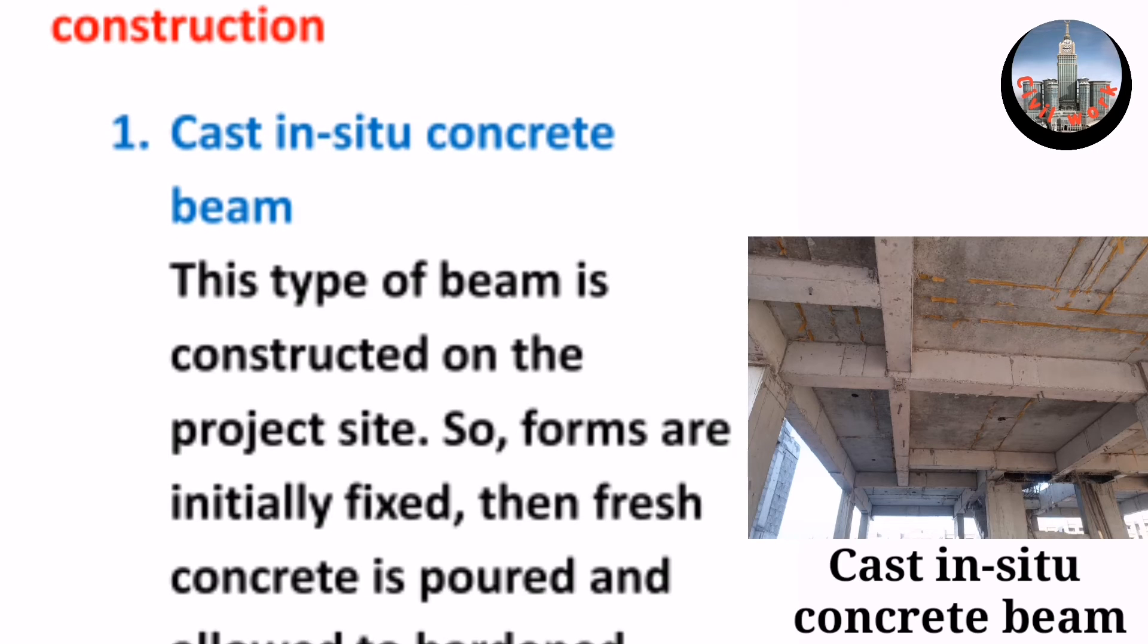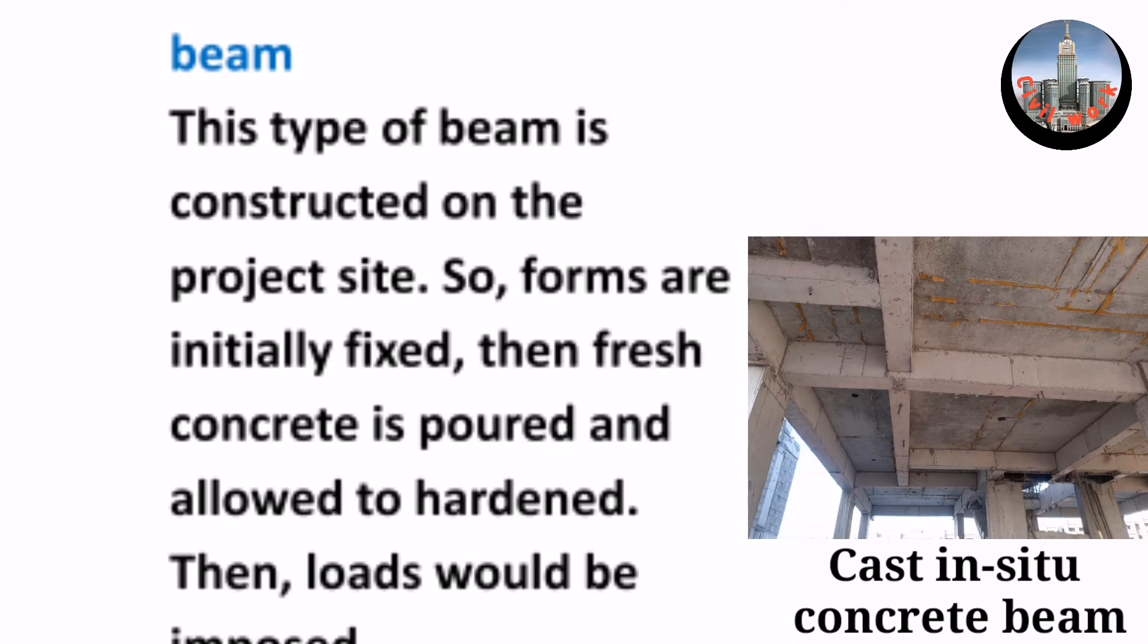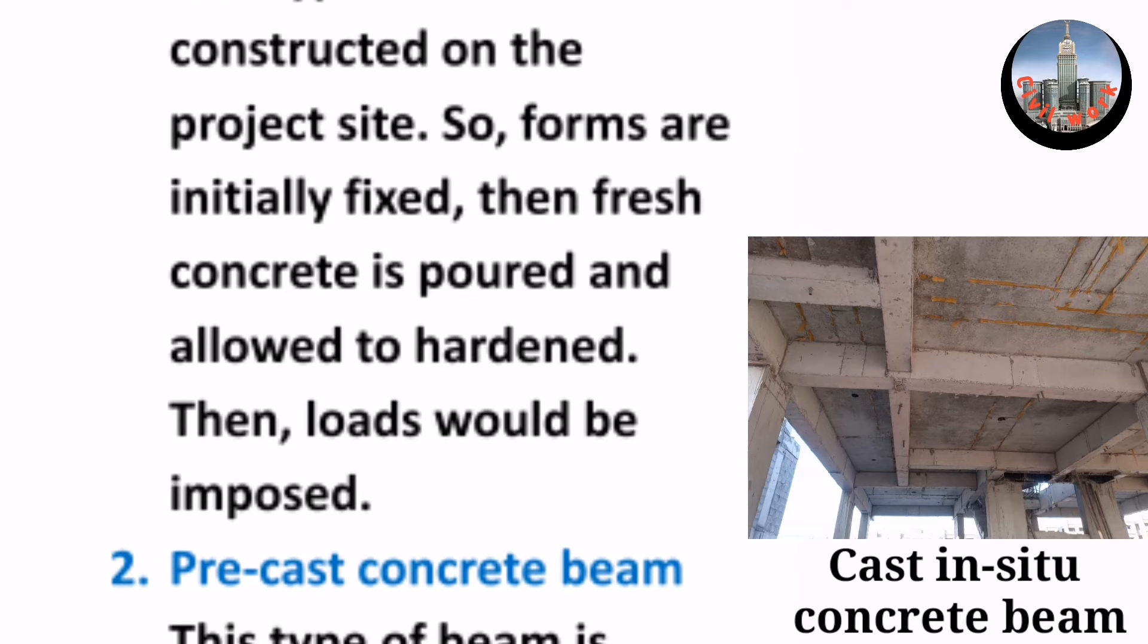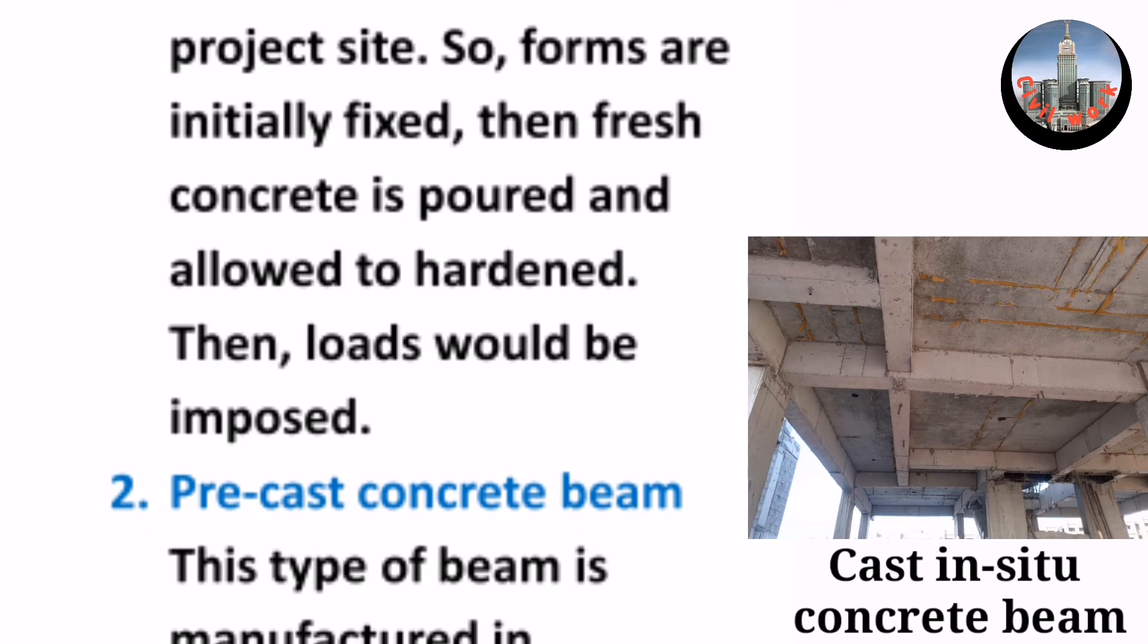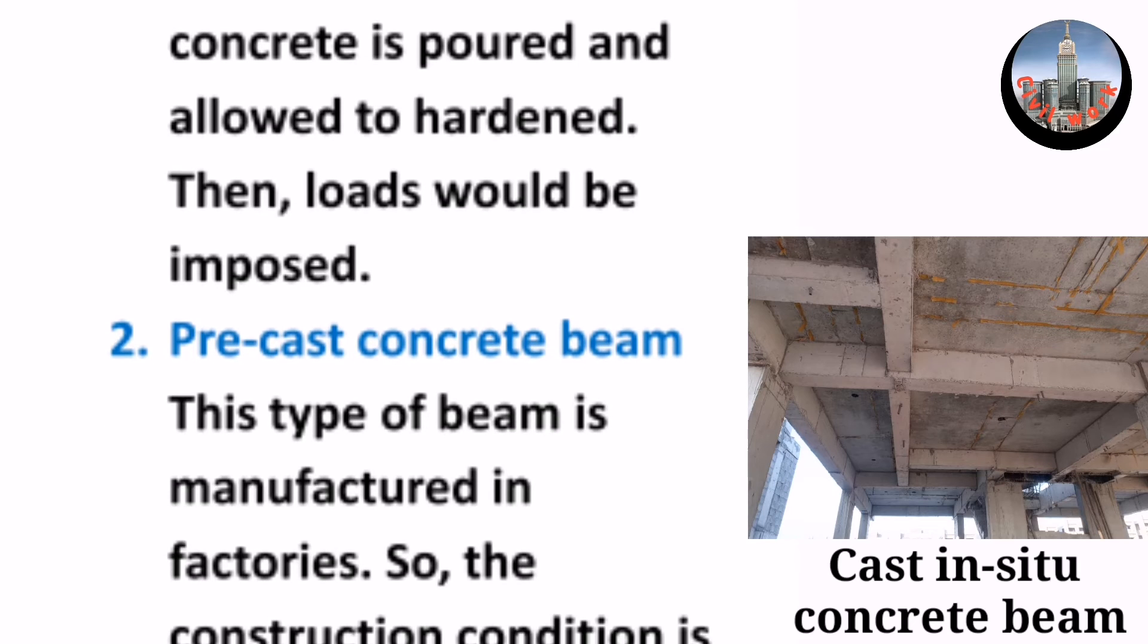1. Cast in situ concrete beam. This type of beam is constructed on the project site, so farms are initially fixed, then fresh concrete is poured and allowed to harden, then loads would be imposed.